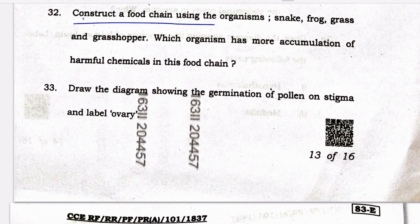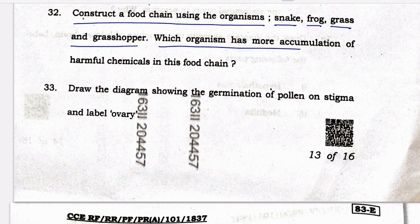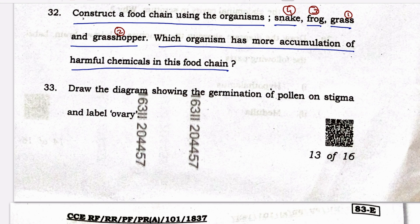Construct a food chain using the organisms snake, frog, grass, and grasshopper. Which organism has more accumulation of harmful chemicals in this food chain? The food chain is: grass → grasshopper → frog → snake. Since harmful chemicals tend to biomagnify as they move up the food chain, the snake, being at the top, will have the highest accumulation of harmful chemicals.